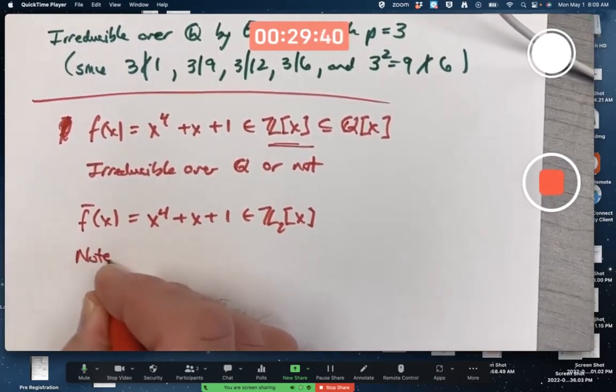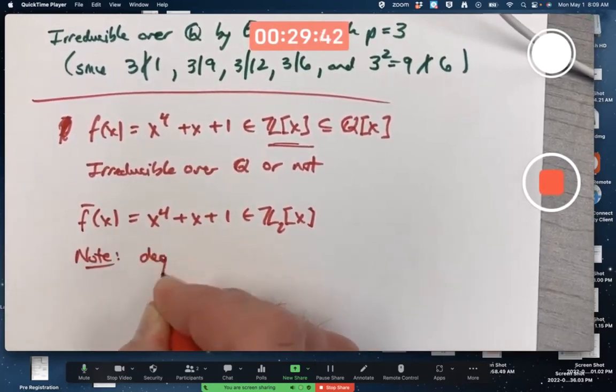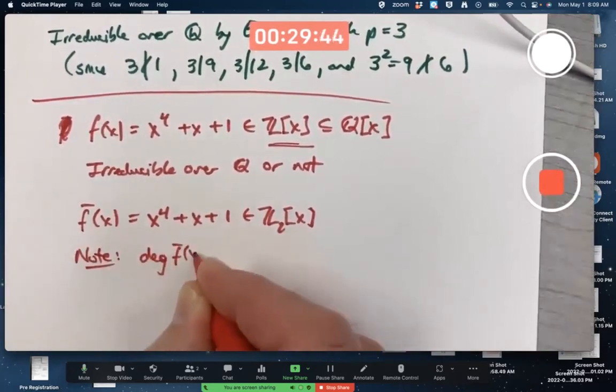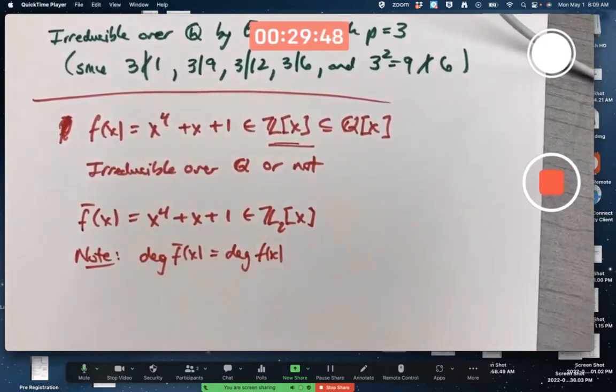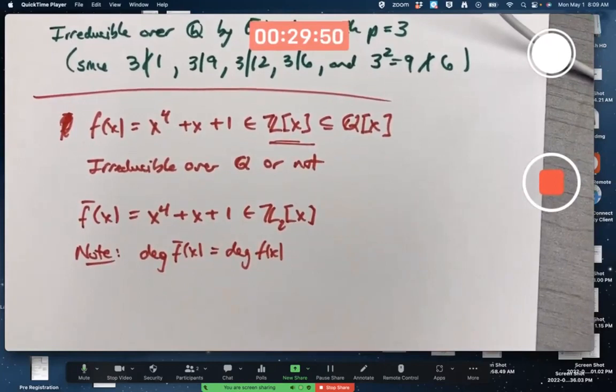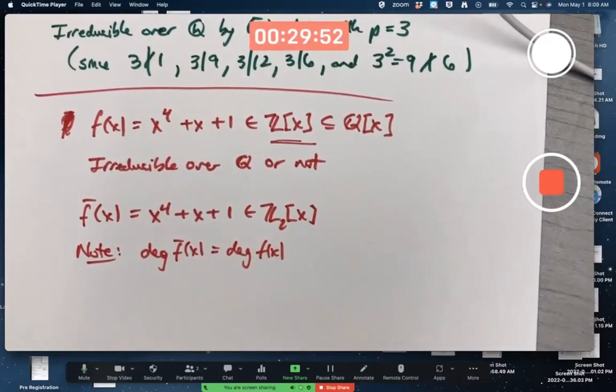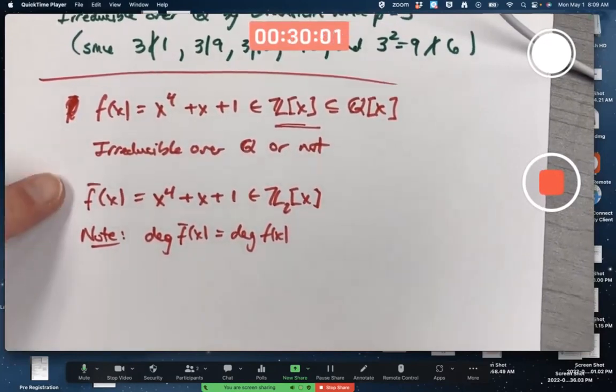So now the question is, the degree stayed the same. Note, the degree of this new polynomial f bar of x is the same as the original degree. We need that to happen if we're going to have any hope of success in applying this mod p irreducibility test. The only question is, is this irreducible over Z_2 or not? You're hoping that it is.